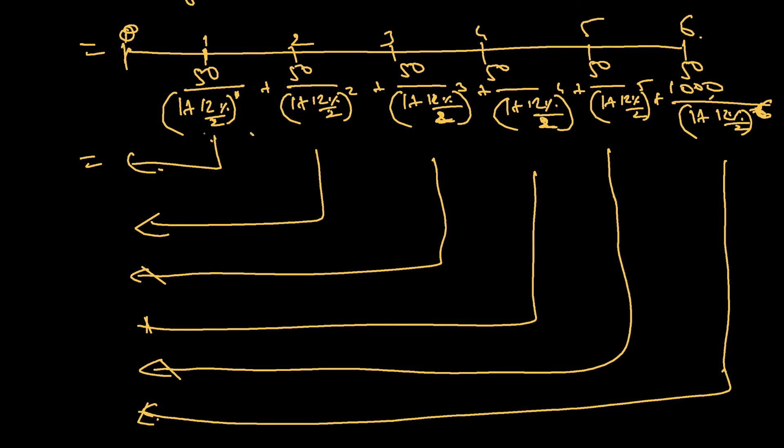First one comes to 47.17, second one is 44.50, third one is 41.98, fourth one is 39.60, fifth one is 37.36, sixth one is 740.20. I need to add up all this.